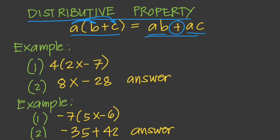For example, given 4 times (2x minus 7), we distribute 4 to each term inside the parentheses. That gives us 4 times 2x, copy the minus sign, then 4 times 7. So 4 times 2x equals 8x, and 4 times 7 equals 28. Our final answer is 8x minus 28.